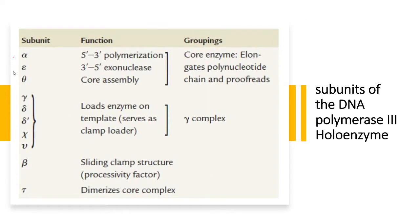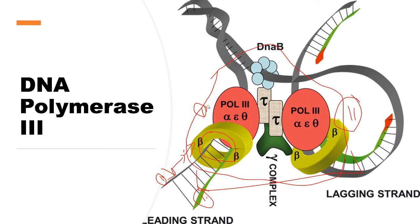Ten subunits — alpha, epsilon, and theta — form the core enzyme of DNA Pol 3. The gamma complex is formed with the help of five subunits: gamma, delta, delta prime, chi, and psi. There is also the psi subunit, the beta subunit, and the tau subunit. As you can see in the picture, alpha, epsilon, and theta — shown in pink — form the core enzyme.